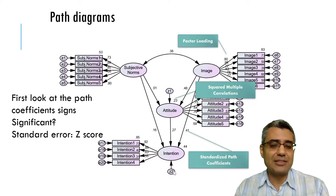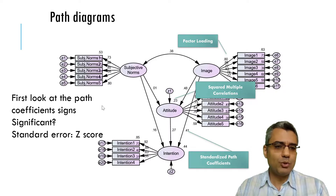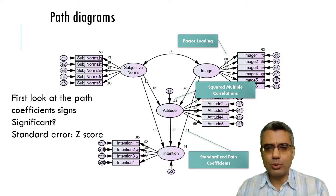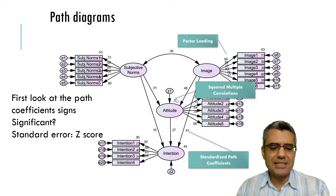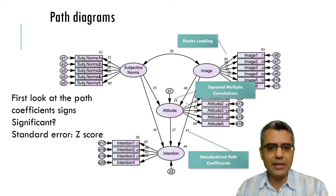So this is what you get from the path diagram. You can go through the results and see whether the path coefficients are significant and what their signs are.